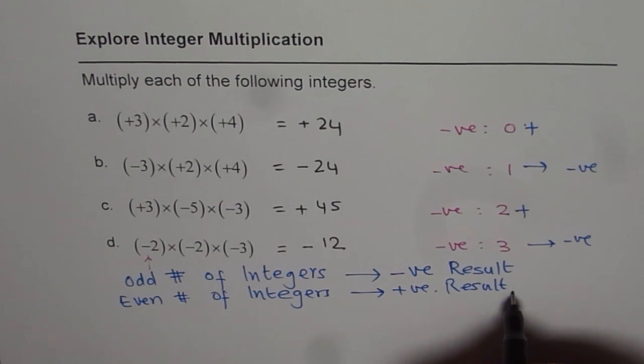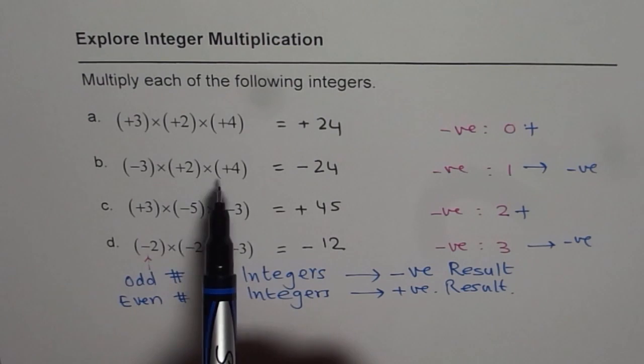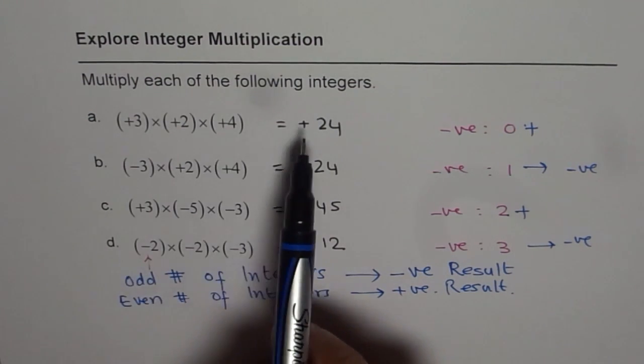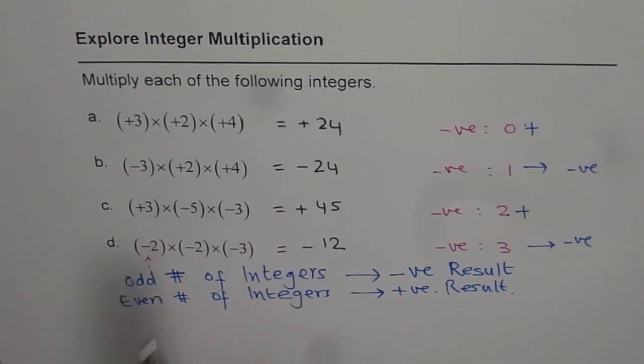But if you multiply even number of integers, then the result is always positive. So that is the key. When you start doing multiplication for more than two integers, just count the negative integers. Here, zero, so positive. One, one is an odd number, negative. One, two, two is an even number, positive. One, two, three, three is an odd number and therefore a negative result.